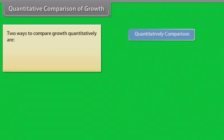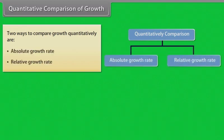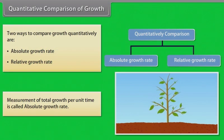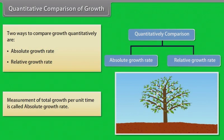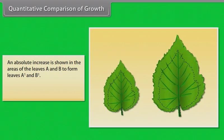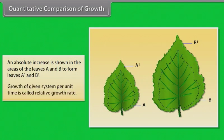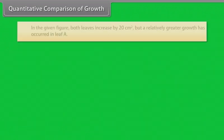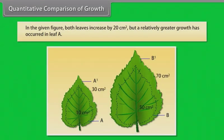Quantitative comparison of growth. Two ways to compare growth quantitatively are absolute growth rate and relative growth rate. Measurement of total growth per unit time is called absolute growth rate. An absolute increase is shown in the areas of the leaves A and B to form leaves A1 and B1. Growth of given system per unit time is called relative growth rate. In the given figure, both leaves increase by 20 cm², but a relatively greater growth has occurred in leaf A.